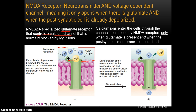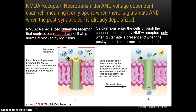Embedded within the cell wall of the postsynaptic membrane are receptors. Receptors act like locks, and the neurotransmitters are like the key that fits into that lock. Many types of receptors, like NMDA, are not just a receptor but also what's called an ion channel — basically like a doorway through the cell wall. When the receptor binds with its appropriate neurotransmitter, this channel will open up and allow the influx of ions, which are molecules that have an electrical charge.